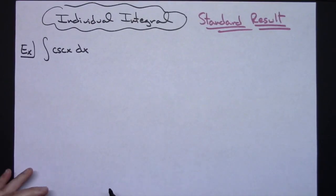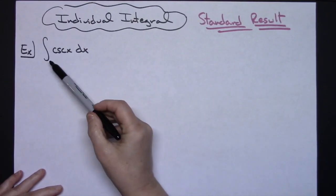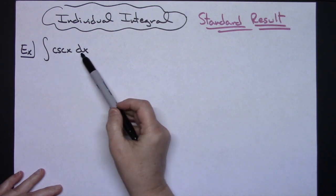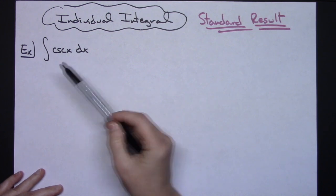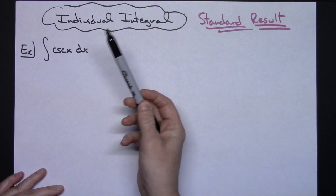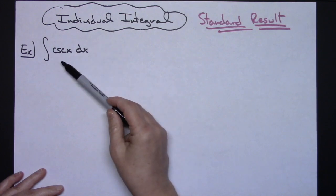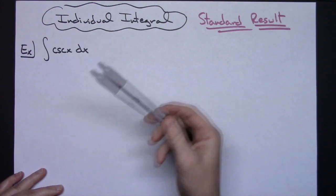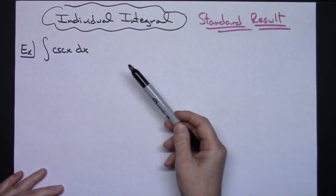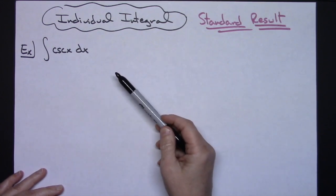In this video I'm going to work out an individual integral. We're going to take a look at the integral of cosecant x dx. We are going to come up with just a standard result. This is oftentimes an integral that many people will just go ahead and memorize because it's used a lot.